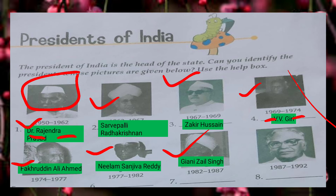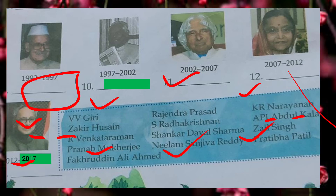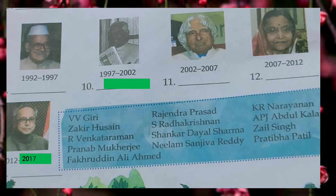He was the seventh President of India. And the next one in picture number 8 is Ramaswamy Venkataraman, the eighth President of India. In picture number 9, you have to identify Shankar Dayal Sharma. He was the ninth President of India.